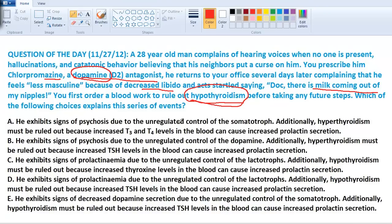He exhibits signs of psychosis due to unregulated control of somatotroph. Somatotroph, what's coming from that? Growth hormone. That has nothing to do with it, so we can cross that choice off. He exhibits signs of psychosis due to unregulated control of dopamine. Possibly. Additionally, hyperthyroidism must be ruled out because increased TSH levels can cause increased prolactin secretion. That is true and pretty close, but if somebody had increased TSH and therefore also had increased T3 and T4, they would have conditions such as exophthalmos, palpitations, sweating.